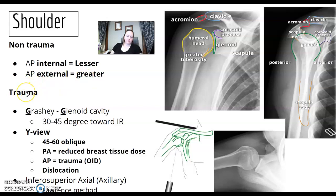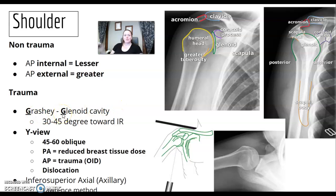In a trauma situation, think Grashey and glenoid — I just remember GG. The Grashey view is where you want to see the glenoid space. It's less of an oblique than the Y view — it's only 30 to 45 degrees oblique toward the image receptor.